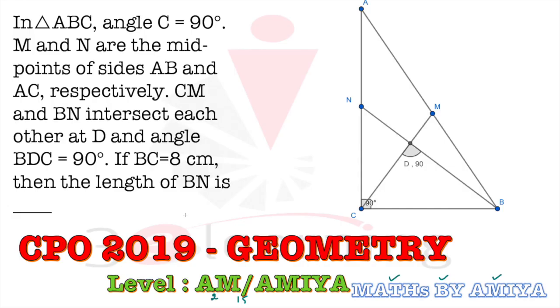I hope you have paused the video and solved the question. This one is quite an easy but basic and conceptual question. So BC is given nothing but 8. We need to find the length of BN if we have a right angle triangle and the median intersect at the right angle.